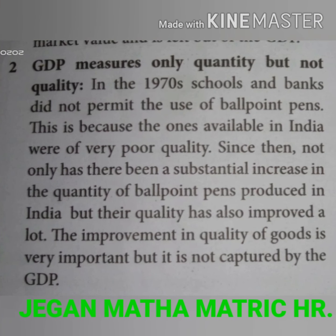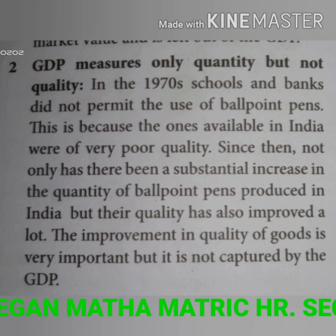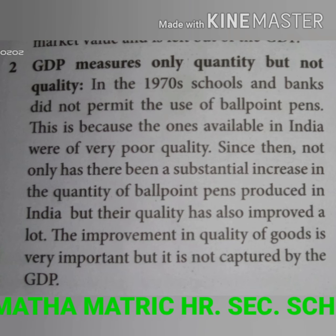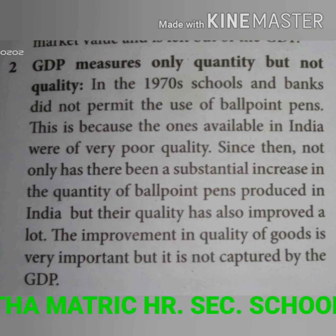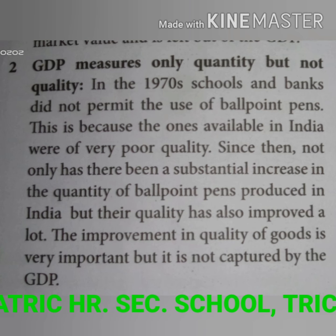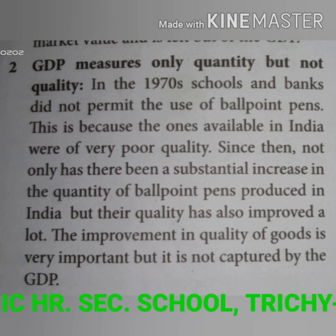The second limitation is that GDP measures only quantity but not quality. In the 1970s, schools and banks did not permit the use of ballpoint pens because the ones available in India were of very poor quality. Since then, not only has there been a substantial increase in the quantity of ballpoint pens produced in India, but their quality has also improved a lot. However, this improvement in quality is not captured by GDP.